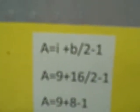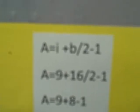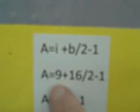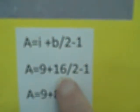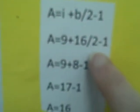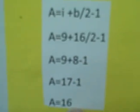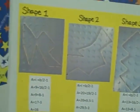So looking at the equation, A equals I plus B divided by 2 minus 1: 9 was the interior points for this unstructured shape, plus the boundary points, which was 16, and then you divide that by 2 minus 1, which gives you the answer of 16 after you work the problem out. That was proving my hypothesis to be correct.